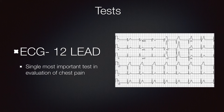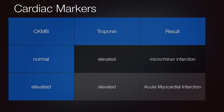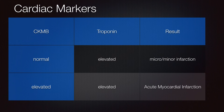Given their other comorbidities, you have to do other tests which will indicate that the patient is having a non-ST elevated myocardial infarction. That leads to cardiac marker tests. If you order a CKMB and a troponin level, and the CKMB is normal yet the troponin level is elevated, you might have a micro or minor infarction. But if both are elevated — CKMB and troponin — you should be highly suspicious and believe the patient is having an acute myocardial infarction.